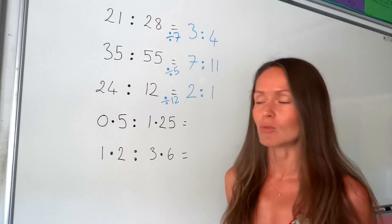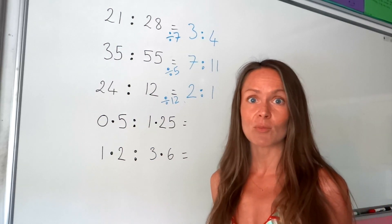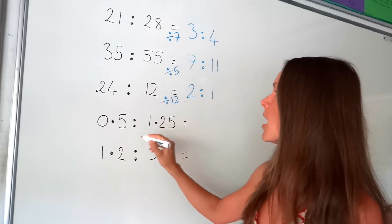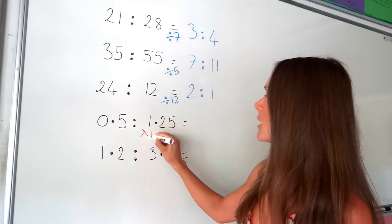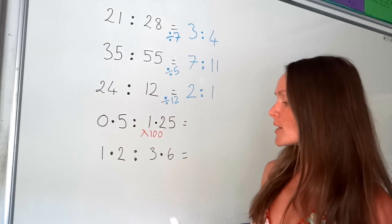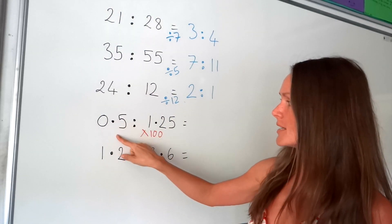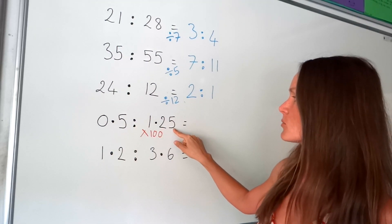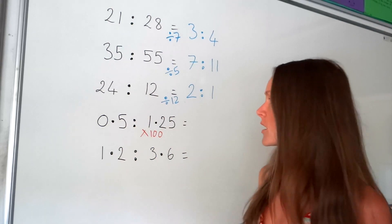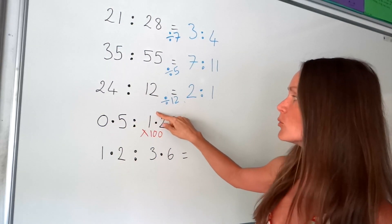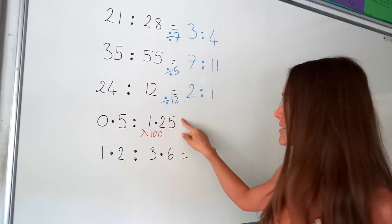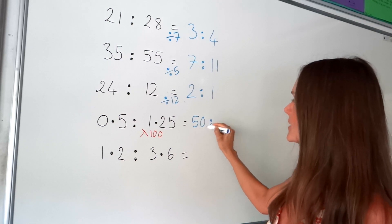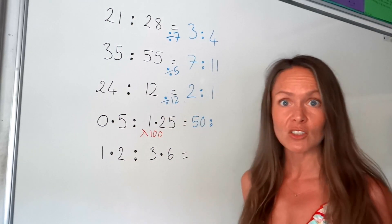Now on this one we have decimals. We're not allowed to have decimals in ratios. To get rid of the decimals in this question, I must multiply by 100. Because there are two numbers after the decimal point, I have to multiply by 100 so the decimal point moves two places. So when I multiply by 100, I get 50 and 125.